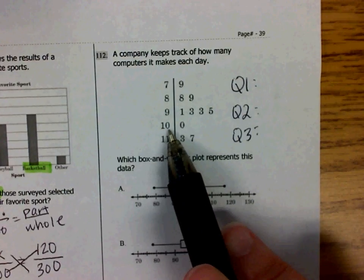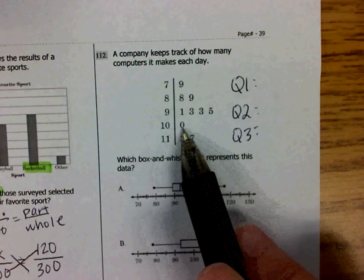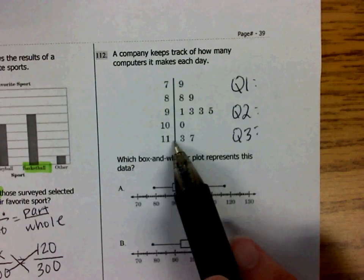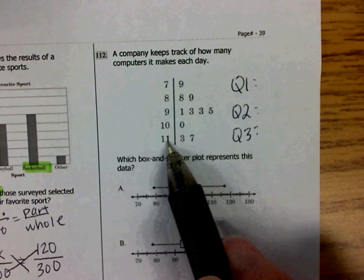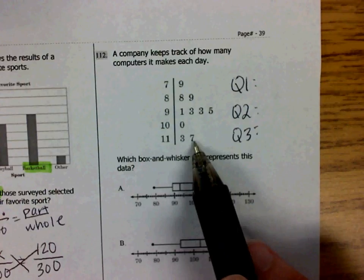Now down here, this number with a stem of 10 and a leaf of 0 is 100. This number right here is 113, and the last number is 117.